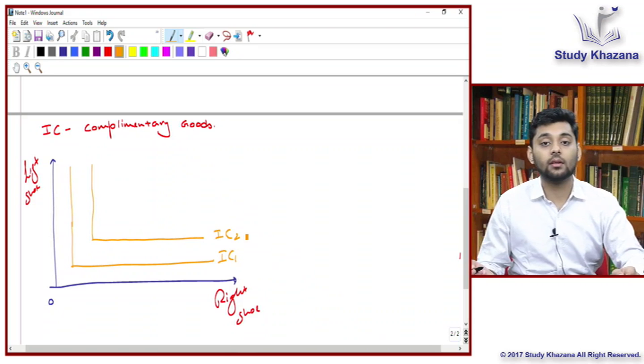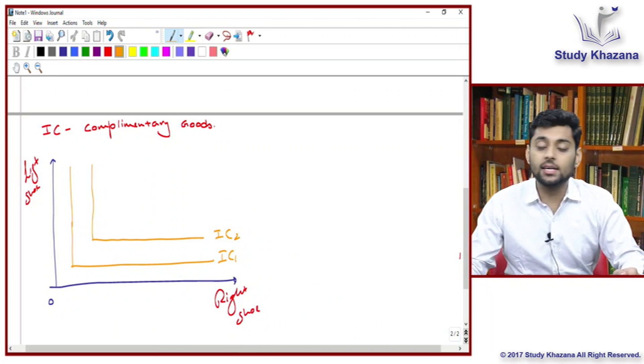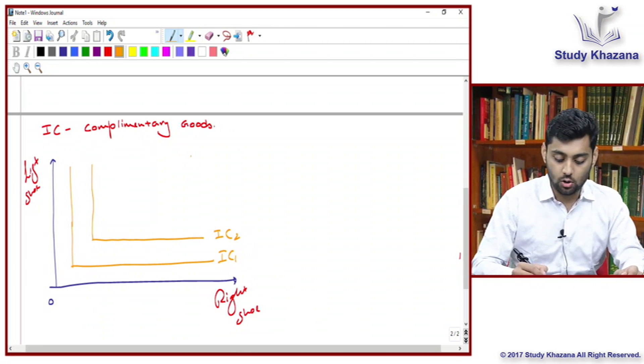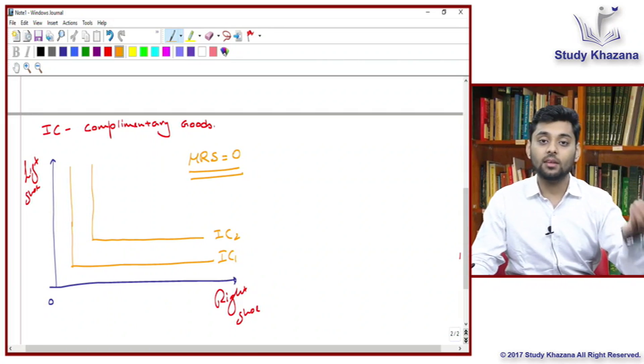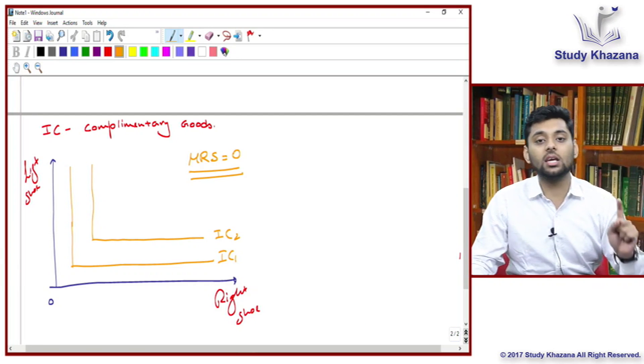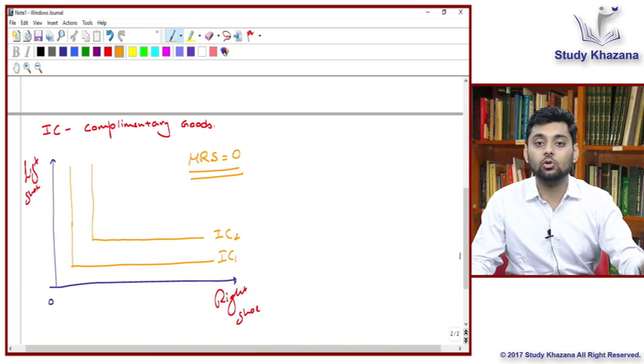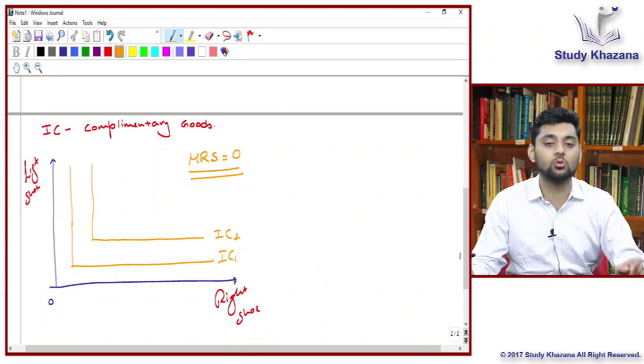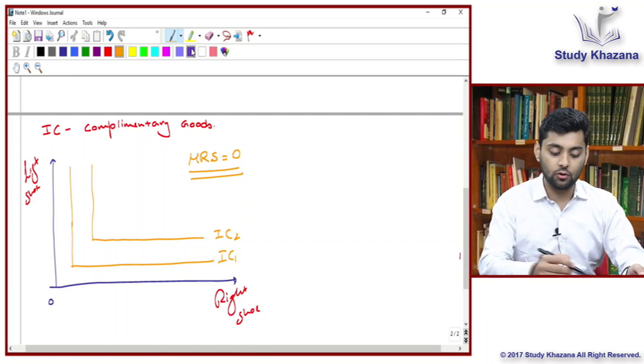In this case, the indifference curve that you will see will be of L shape. That's IC1, and so on. Again, higher the IC, higher the satisfaction. Now what is the reason behind this L shaped curve? The technical reason is that there is no marginal rate of substitution. You can say over here the MRS is zero.